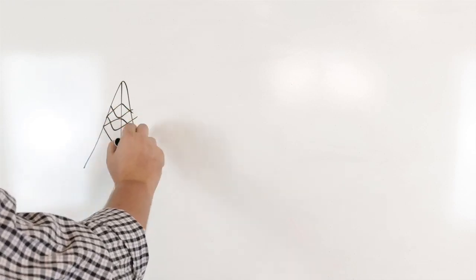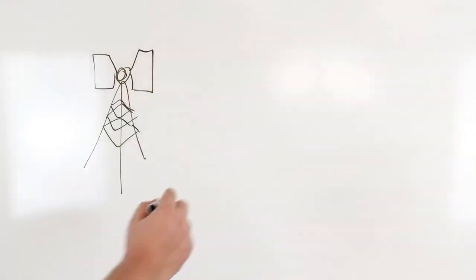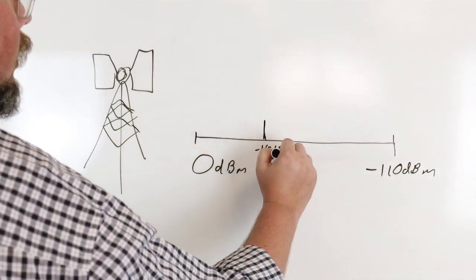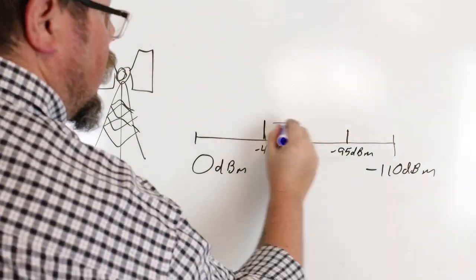Speaking of signal strength, when looking at signal strength in dBm, the further you get from the number zero, the worse the signal gets. In SureCall systems, a signal strength between negative 45 and negative 95 dBm is ideal.